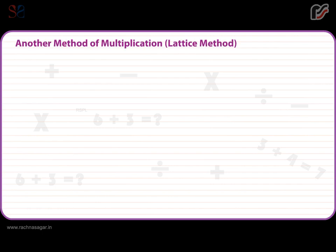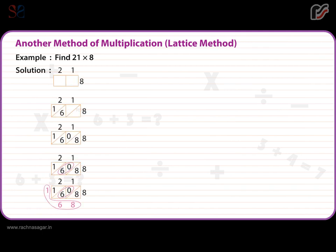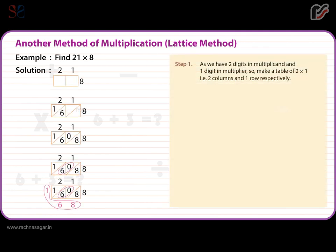Another method of multiplication: Lattice method. Example: Find 21 x 8. Solution. Step 1: As we have two digits in multiplicand and one digit in multiplier, make a table of 2 x 1, i.e., 2 columns and one row respectively.